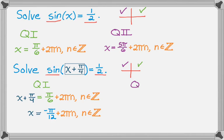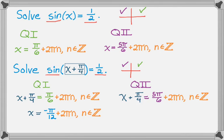For quadrant 2, whatever is in the box — x plus pi over 4 — could be 5 pi over 6 plus 2 pi n. Then 5 pi over 6 is 10 pi over 12 minus 3 pi over 12, so I get 7 pi over 12, plus 2 pi n, where n is an element of the integers.